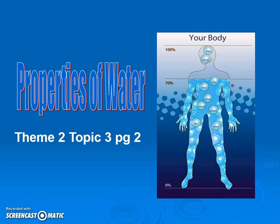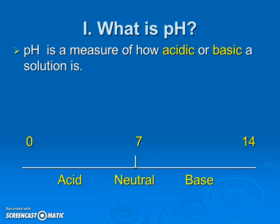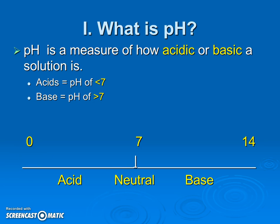Today we're going to be talking about the properties of water, biology students. Let's jump in — but before we jump into water, remember that pure water is neutral at pH 7. On either side of the pH scale we have acids and bases. Acids are lower than seven, bases are above seven. In nature, water is not always exactly neutral, so just keep that in mind.